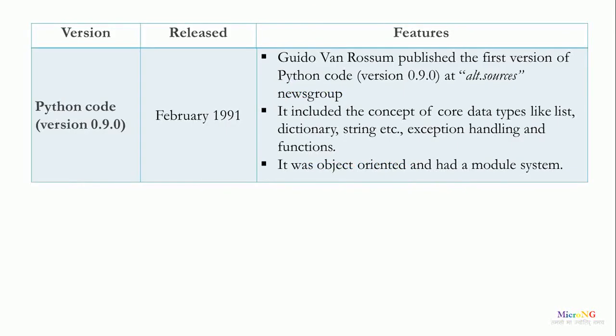Let us see the different versions of Python language, their release dates, and various features included. The first version, Python 0.9.0, was released in February 1991. Guido van Rossum published it at the alt.sources newsgroup. It included core data types like list, dictionary, and strings, exception handling and functions, object-oriented programming features, and a module system.